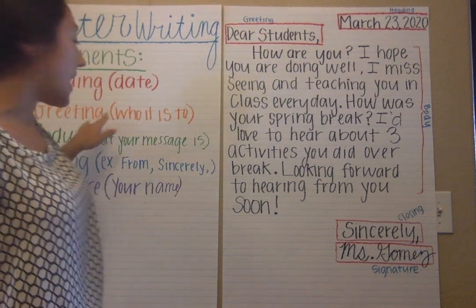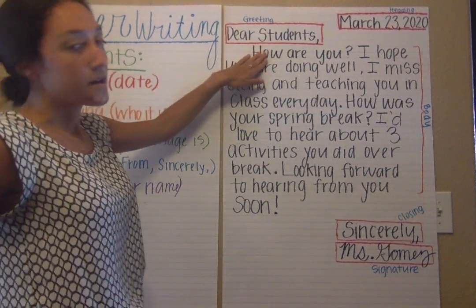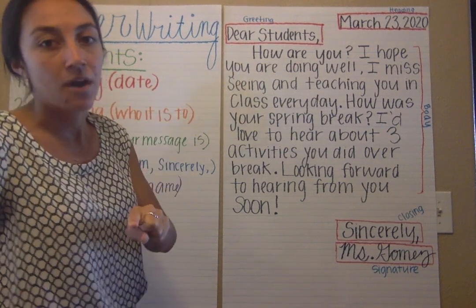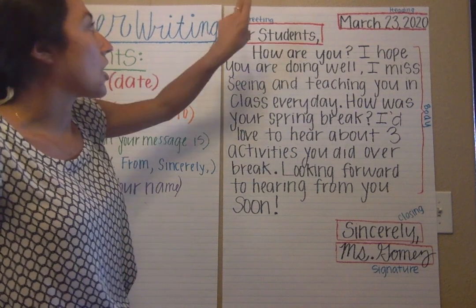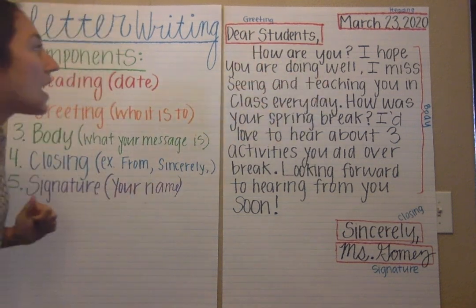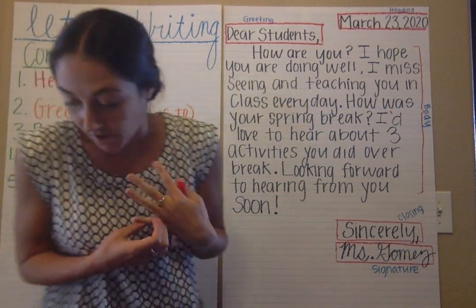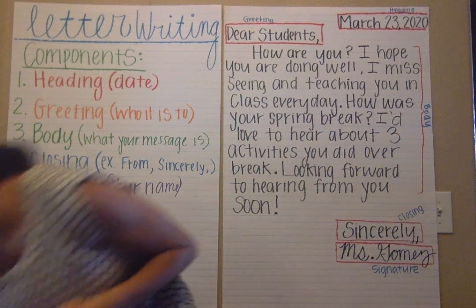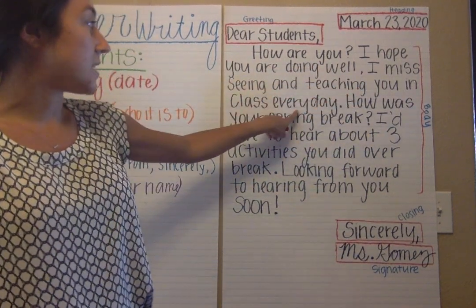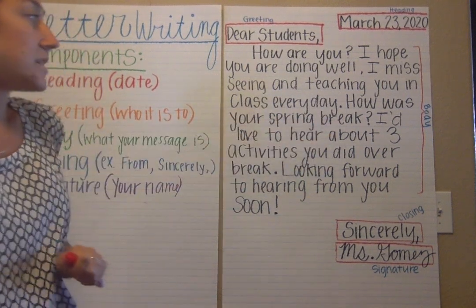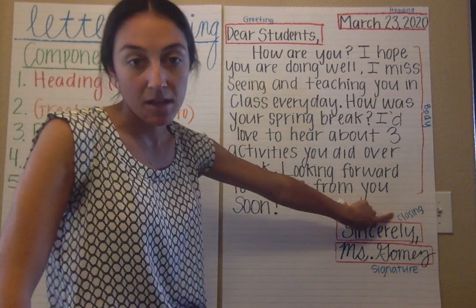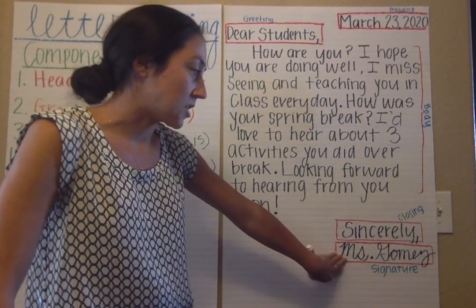The third step is the body. Skip another line and, just like with every other paragraph, you indent — either click the tab button on your computer, go in five spaces, or on binder paper about two spaces. Then write what you want your reader to know or ask them questions. Mine says: 'Dear Students, how are you? I hope you are doing well. I miss seeing and teaching you in class every day. How was your spring break? I'd love to hear about three activities you did over break. Looking forward to hearing from you soon.' Then I finish with 'Sincerely' as my closing, and then my signature.